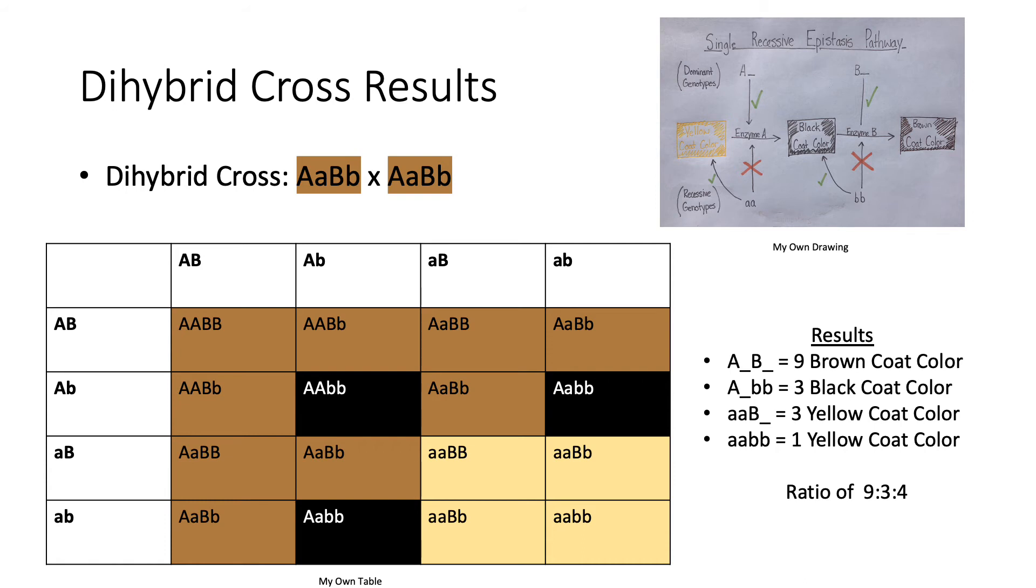From the table, one can see that nine offspring display a dominant genotype at both alleles, meaning both enzymes are produced in brown coat color phenotype as a result.